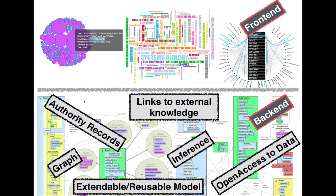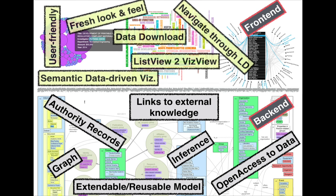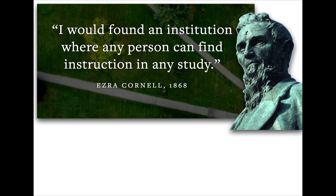In summary, we're starting with a VIVO-based back end, taking advantage of the excellent VIVO model and ontology, and building a fresh front-end experience with D3 visualizations. At the back end we have authority records, inference, and links to external knowledge sources with open access. On the front end we're looking for fresh looks and feels, data downloads, moving away from list views toward a more dynamic interactive view. With no further ado, I'm going to have Javed show you this, because the most fun part is actually seeing the demo.